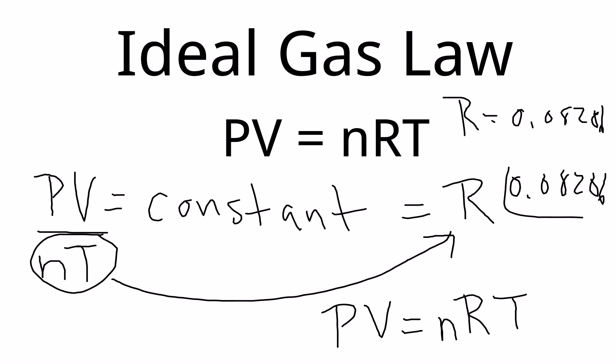All right. Now, some people say 0.0821, they round up. That's perfectly fine. We're going to talk about R a little bit more in the next lecture and why it is that value, because certain units are built into it.